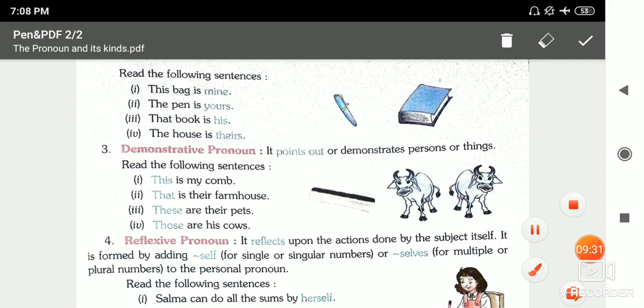Next is demonstrative pronoun. Demonstrative pronoun points out or demonstrates a person or thing. This is my comb - we point it out like this. So 'this' is demonstrative pronoun here. That is their farmhouse - the farmhouse is theirs.